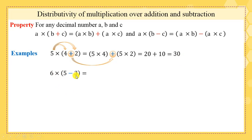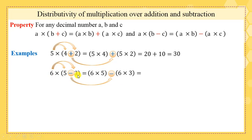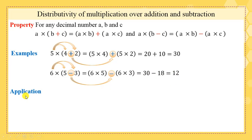Another example: 6 × (5 − 3) = 6 × 5 − 6 × 3. 6 × 5 equals 30, 6 × 3 equals 18, 30 − 18 equals 12.